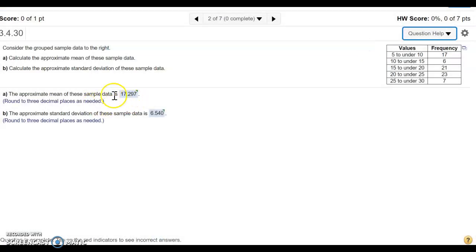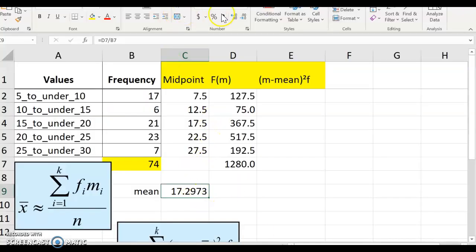And we want to round to three decimal places. So let's decrease the decimal. So there's our mean. I'm going to highlight that.